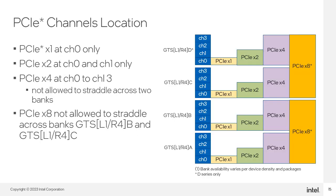This slide makes clear the rules regarding transceiver channel versus PCIe lane usage in both D and E-series devices. For all link widths, lane zero must align with channel zero in the bank — the lowest channel. So if you are using PCIe by-one, then you must use channel zero. If you are implementing a by-eight, then lane zero is channel zero of the lower bank. If by-two, then lanes zero and one must be in channels zero and one. For by-four, the entire bank is consumed with lane zero starting in channel zero. You cannot put PCIe by-four across two banks.